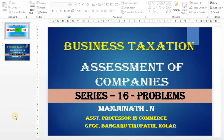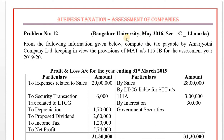This question has been asked in the Bangalore University examination of May 2016, Section C, for 14 marks. From the following information, compute the tax payable by Amar Jyothi Company Limited, keeping in view the provisions of MAT under Section 115JB for the assessment year 2019-20. We have to compute total income as per normal provisions, book profit, MAT (Minimum Alternative Tax), and finally the tax liability of Amar Jyothi Company Limited.